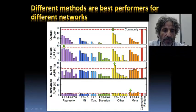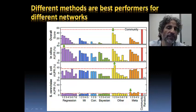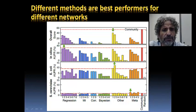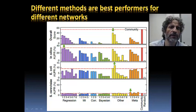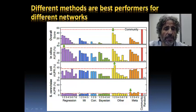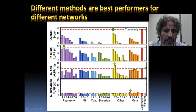Let me discuss the results of a paper that appeared in Nature Methods in August 2012, titled 'Wisdom of Crowds for Robust Gene Network Inference.' One of the important conclusions is that different methods are best performers for different networks — there is no one-size-fits-all when it comes to network inference. That's a conclusion we have reached in many challenges: there is no one algorithm that solves all similar problems, and the best method today is not necessarily best on a similar dataset tomorrow.